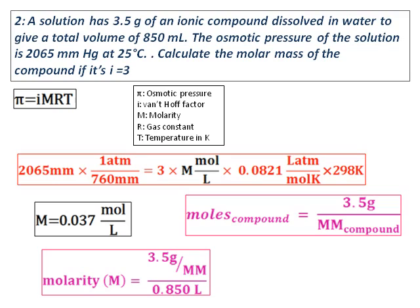Substitute this into the molarity equation: M = (3.5/molar mass) / 0.850. We calculated molarity as 0.037. Substitute that value to find the molar mass, which equals 111 g/mol.